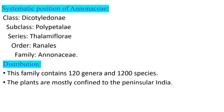Systematic position of Annonaceae. Annonaceae belongs to the class Dicotyledonae — that is, it has a taproot system and also reticulate venation. These are the main identification characters of Dicotyledons. Subclass Polypetalae, that is the petals are free.